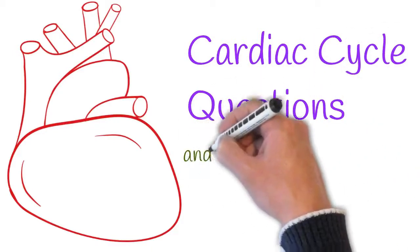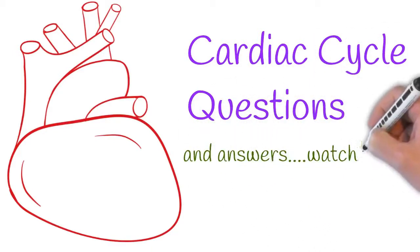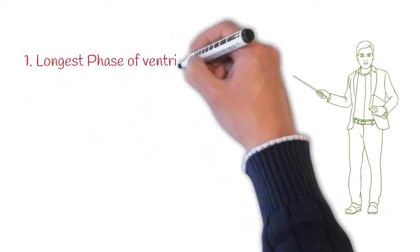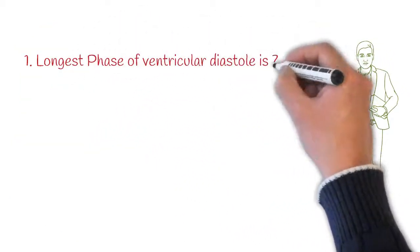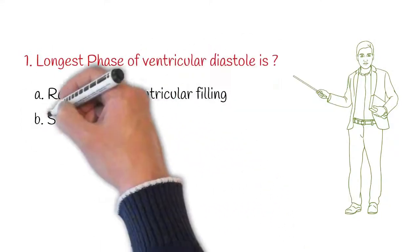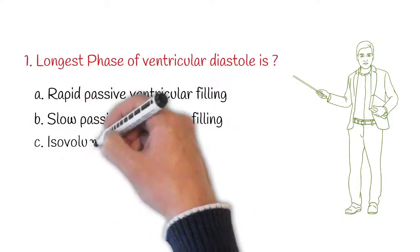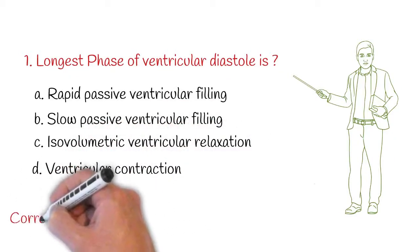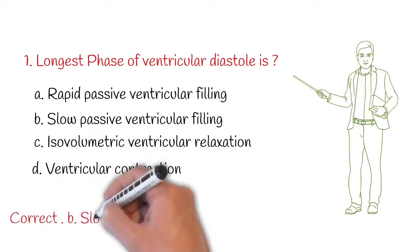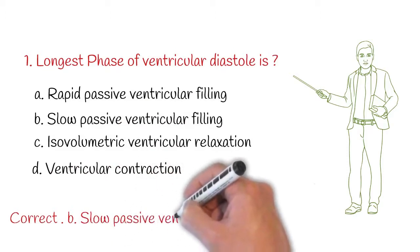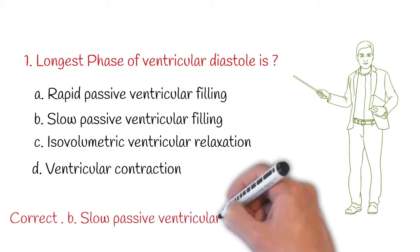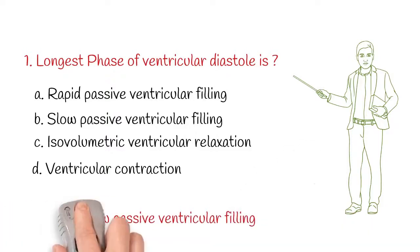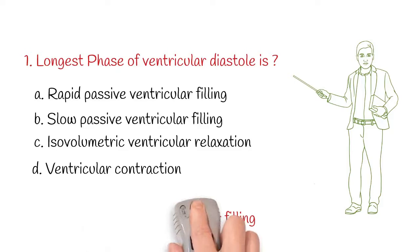Cardiac cycle questions and answers. First question: the longest phase of ventricular diastole is — option A: rapid passive ventricular filling, option B: slow passive ventricular filling, option C: isovolumetric ventricular relaxation, option D: ventricular contraction. Correct answer: B — slow passive ventricular filling. These are the three phases of ventricular diastole: rapid passive ventricular filling, slow passive ventricular filling, and isovolumetric ventricular relaxation.